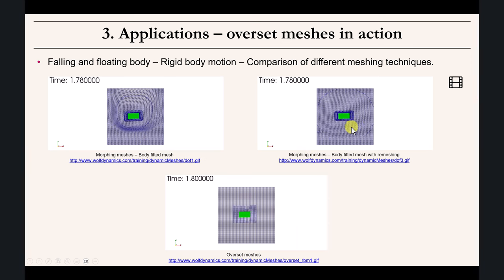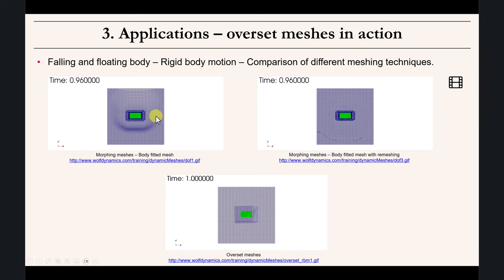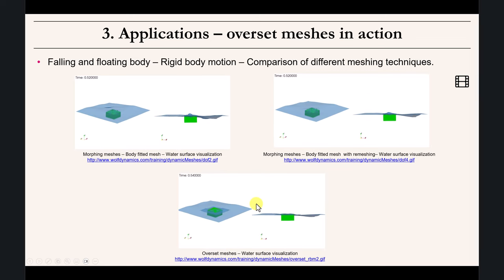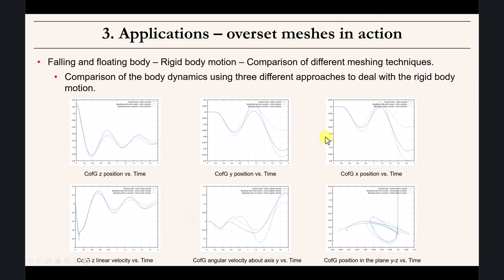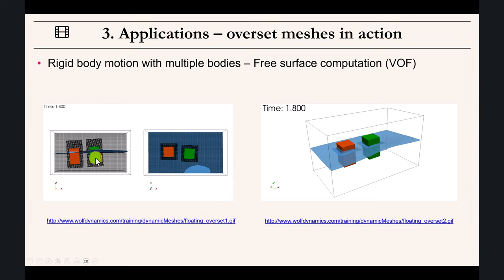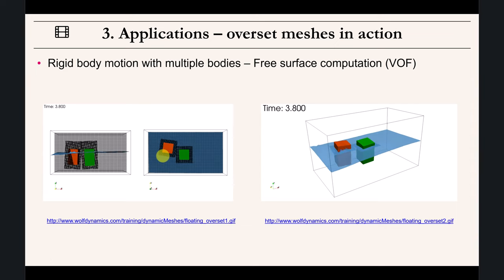Overset meshes become very handy for vortex-induced vibrations — doing this with mesh morphing can be really tricky. And now in 3D, comparing morphing meshes and remeshing, the most flexible approach is overset meshes: you don't need morphing or tweaking parameters to avoid bad quality cells. It is the most flexible option, but you pay a price in computation time. With multiple bodies, overset meshes can handle this very easily — using single-block meshes would be very very tricky.